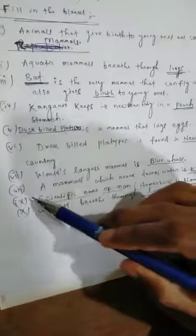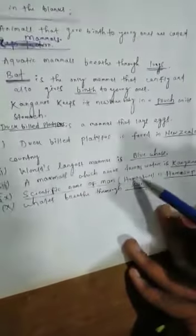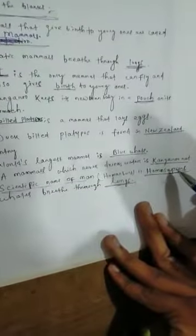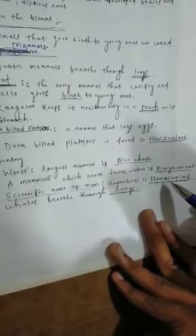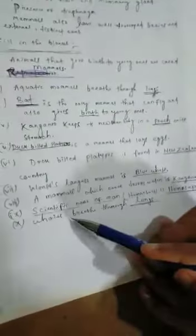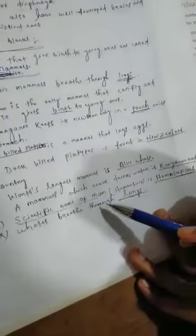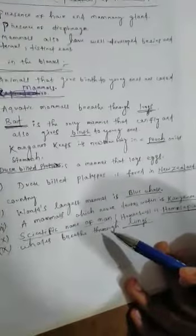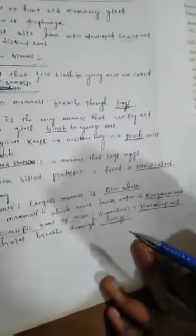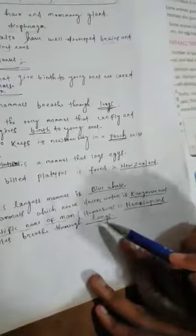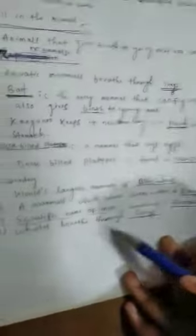Number seven: World's largest mammal is blue whale. Number eight: A mammal which never drinks water is kangaroo rat. Number nine: Scientific name of man - as a science student, you can know about what is the scientific name of man, that means human beings. It is called homo sapiens. Number ten: Whales breathe through lungs.